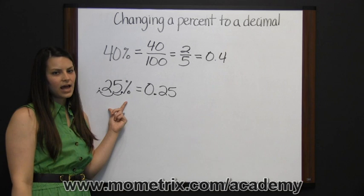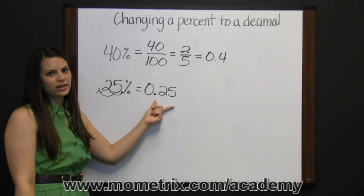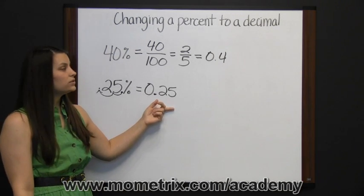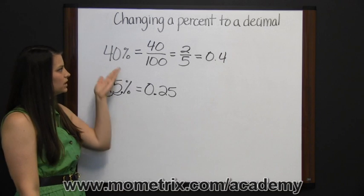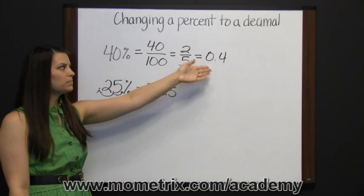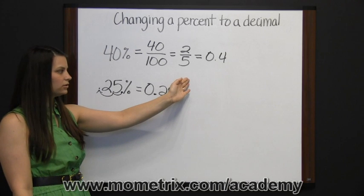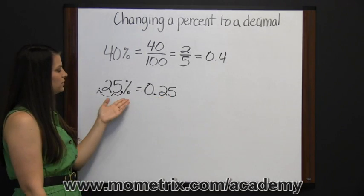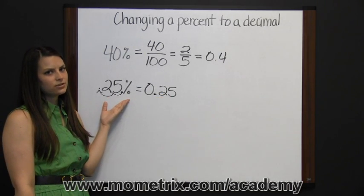So twenty-five percent as a decimal is twenty-five hundredths. Your two methods are change your percent to a fraction and your fraction to a decimal by dividing numerator by denominator, or move your decimal two places to the left.